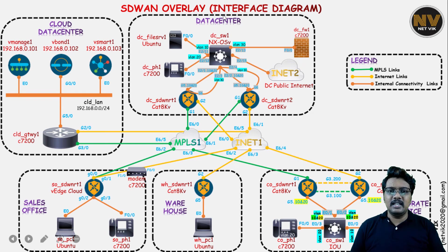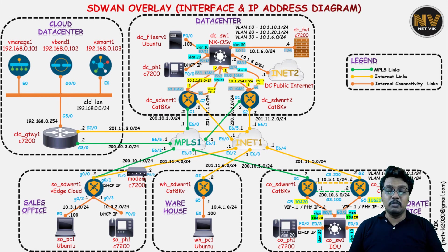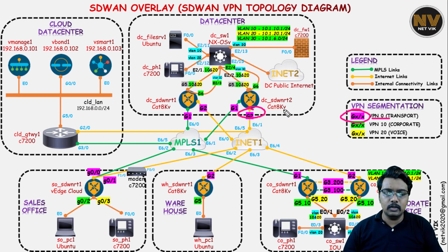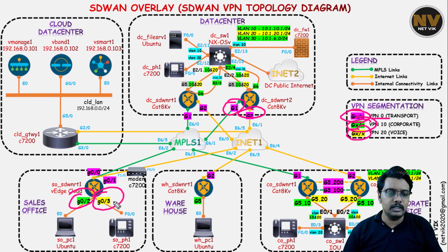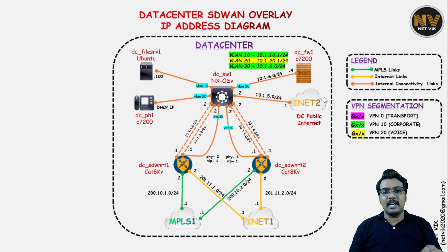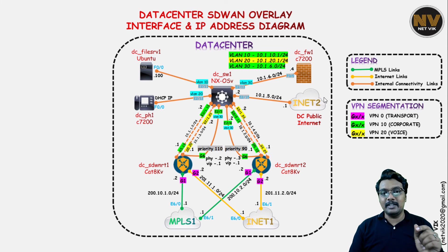The next slide is the interface diagram, which shows the interface numbers we are going to use in our lab topology. Followed by that, there is a separate slide for IP addresses only, and one which shows both interface and IP address. There is also a specific slide talking about which interfaces are configured under which VPN — for example, those shown in one color are in VPN 0, green is VPN 10, and yellow is VPN 20. So for the sales office, gig 0.2 is configured under VPN 10 and gig 0.3 under VPN 20. We also have site-specific diagrams: data center physical diagram, data center interface diagram, data center IP address diagram, and data center interface and IP address diagram — helpful when configuring those specific sites.